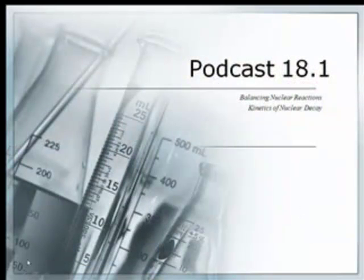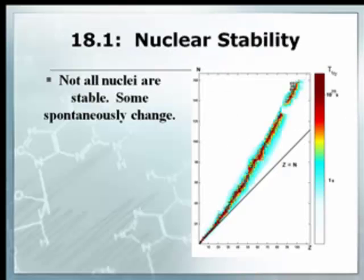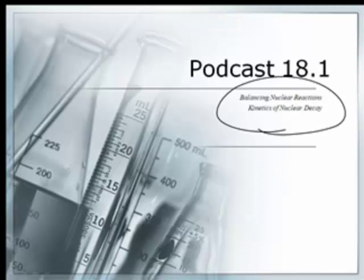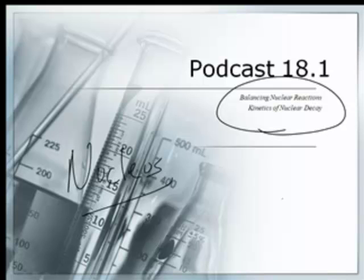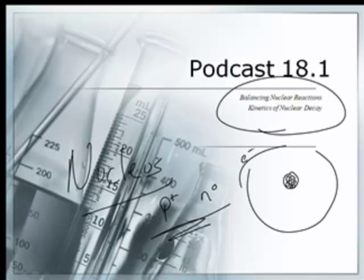So today, what we want to do is nuclear reactions and balancing and the kinetics. So just real fast, nuclear reactions - actually let's back up. Nuclear reactions are about what part of the atom are we going to study? The nucleus. The nucleus can do various and sundry different things. And what do you find in the nucleus, Mr. Sams? Protons and neutrons.